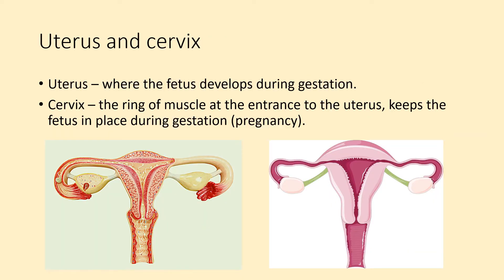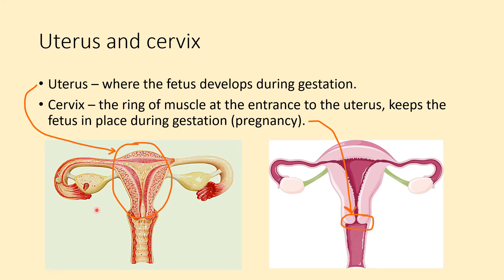Uterus and cervix. The uterus is where the fetus develops during gestation — it's the triangular part on the diagram. The cervix is the ring of muscle at the entrance to the uterus and it keeps the fetus in place during gestation. You can see the cervix and the uterus labelled on both diagrams.